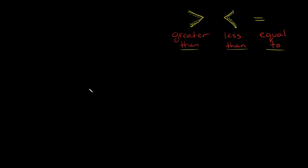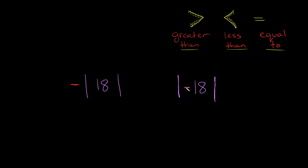Now let's say we wanted to compare the absolute value of 18 and the absolute value of negative 18, and this time I'm going to put a negative sign in front of this one. What's the absolute value of negative 18? This negative sign basically goes away, so all we're left with is 18. And what's the absolute value of 18? That's just 18, but we have this negative sign out in front. Since this negative sign is not inside the absolute value bars, it doesn't just go away — we keep it. So now the two numbers we're going to compare are negative 18 and 18.